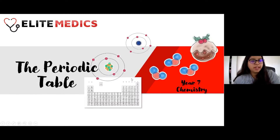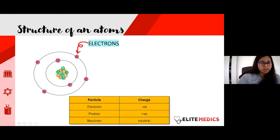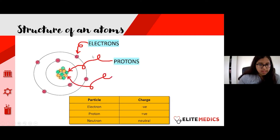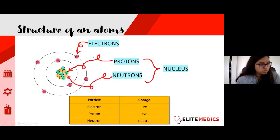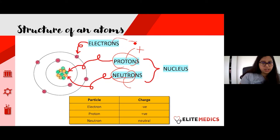Let's begin by kicking off with the periodic table and briefly going over the structure of atoms. In the center we have our nucleus, which contains both our protons and our neutrons. Protons are positively charged, neutrons are neutral — it's in the name — and electrons are negatively charged.